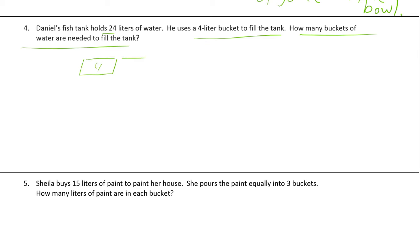We could write: 4 times something equals 24, or something times 4 equals 24. It takes six buckets to fill the tank. If you want to be really impressive, write the division sentence: 24 divided by 4 equals 6.